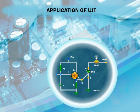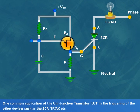An application of UJT is shown in this video. One common application of the unijunction transistor, UJT, is the triggering of other devices such as SCR, TRIAC, etc.